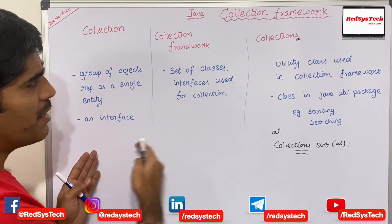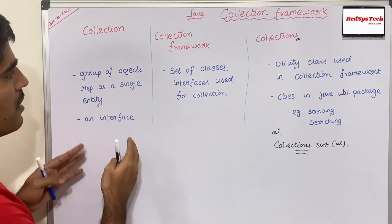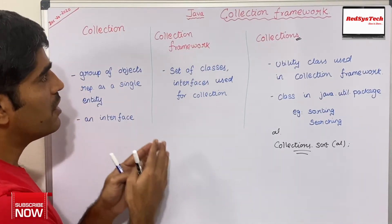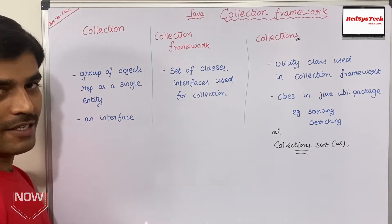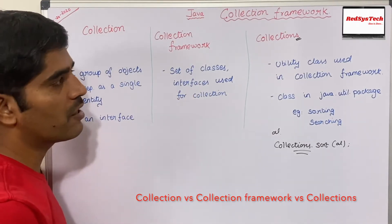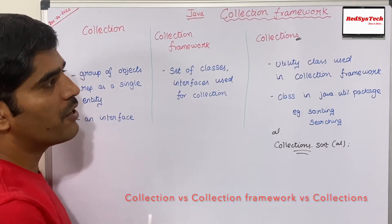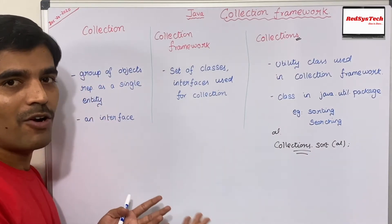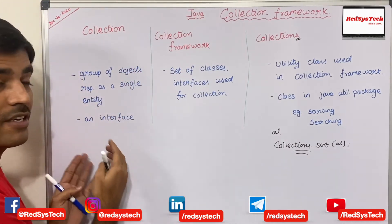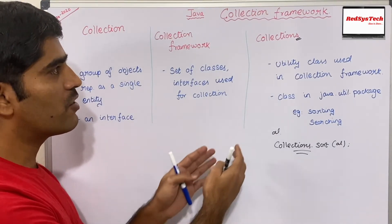So let me summarize this — collection, collection framework, and collections. Collection is nothing but a group of objects which you can represent as a single entity. Collection framework is nothing but the set of classes and interfaces needed to achieve the collection. Collections is nothing but a utility class which exists in java.util package, where you can use it to do sorting, searching, or any common functionalities. The main difference between collection and collections is that collection is an interface, while collections is a utility class.